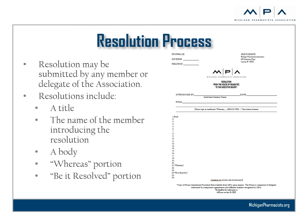The resolution process: resolutions may be submitted by any member or delegate of the Michigan Pharmacists Association. Resolutions include a title, the name of the member introducing the resolution and the name of the organization they represent if applicable, the body of the resolution which provides supporting information or documentation, the whereas portion which provides comments that support the resolved portion of the resolution, and finally the be it resolved portion — the action statement of the resolution indicating exactly what it is that the author of the resolution would like MPA to do.